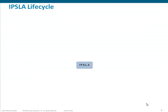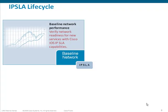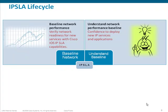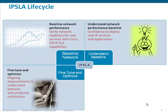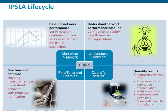Let's see how IPSLA can be used in real life and what it takes to deploy it to get all the performance stats you want. First, you need a good network baseline, and that is what IPSLA helps you with. It helps you verify network readiness when deploying a new service — for example, voice, IP, web service, or FTP. Once you have that baseline, you can fine-tune and quantify results either from a user perspective or your own testing. This is the normal IPSLA lifecycle.